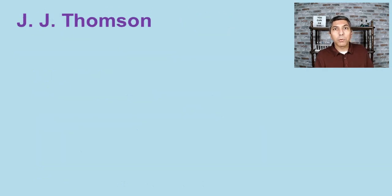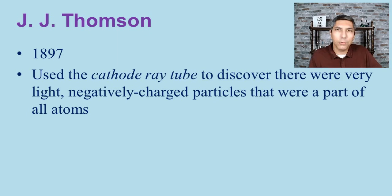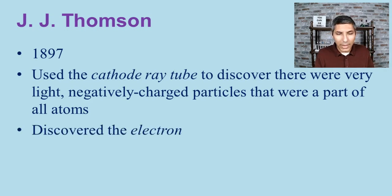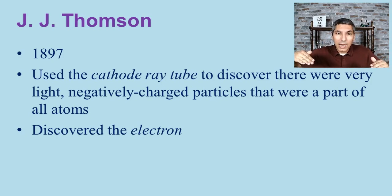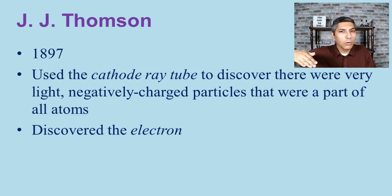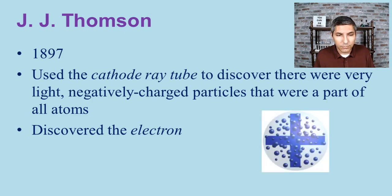Moving forward about 80 more years, we have J.J. Thomson. Around 1897, he used cathode ray tubes to discover very light, negatively charged particles found in all atoms — we give him credit for discovering electrons. Using cathode ray tubes with electric plates on either side, he showed that negatively charged particles were deflected away from the negative plate and toward the positive plate, and he called these particles electrons.